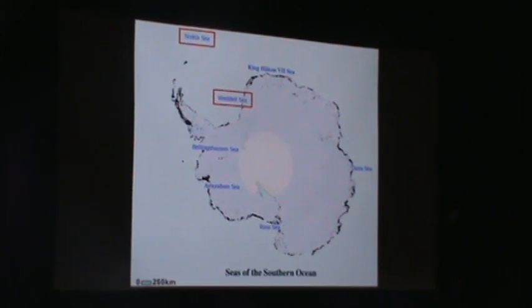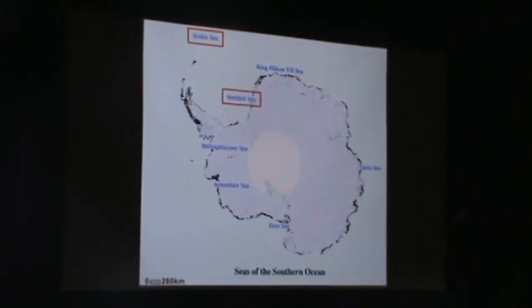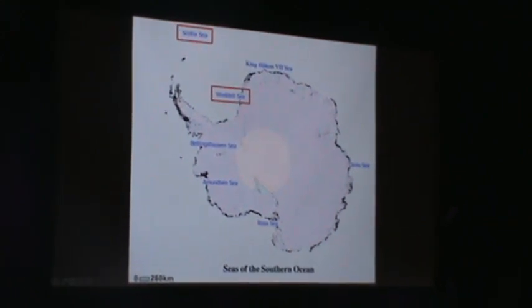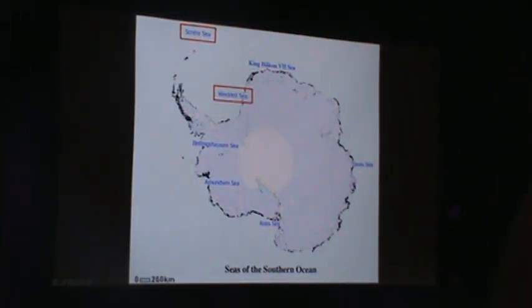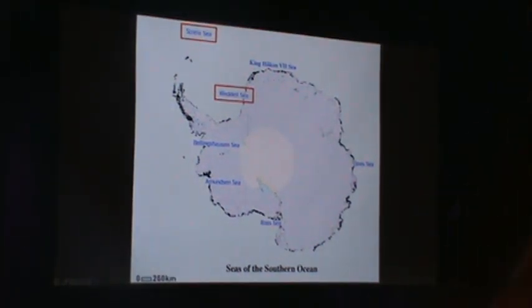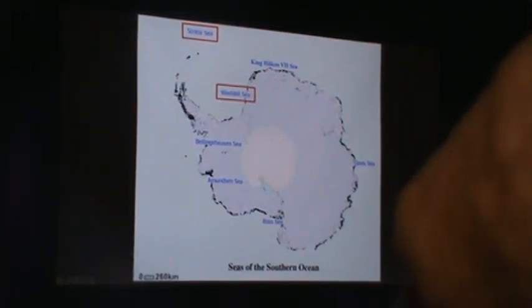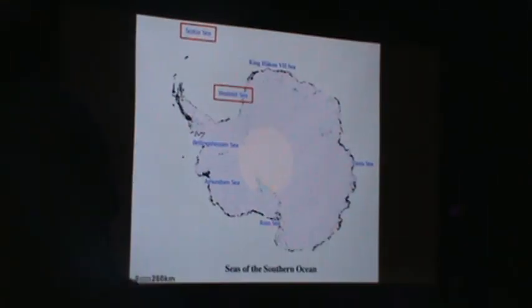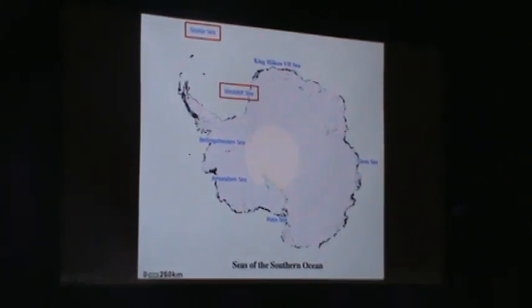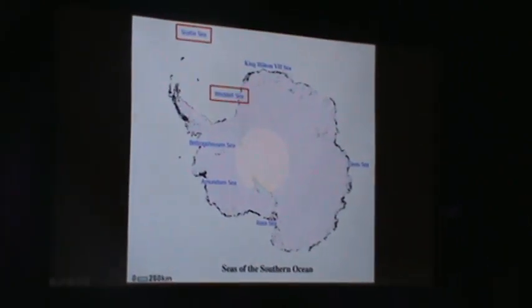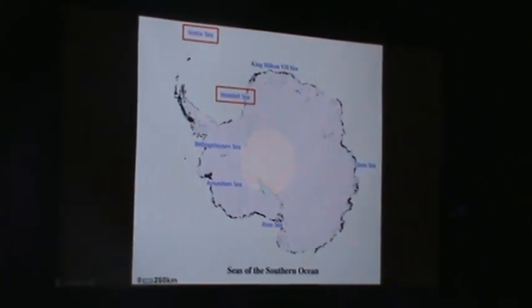So if we look at the Southern Ocean, we're in this sector over here of the Scotia Sea, as we come down onto the South Shetland Islands and then the peninsula itself. And if we're lucky, we may see a little bit of the Weddell Sea, this general area on the east side of the peninsula.